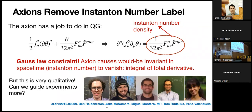One of the most precise statements along these lines is the cobordism conjecture, due to Jake McNamara and Cumrun Vafa, which says different configurations in quantum gravity should be deformable into each other. In quantum field theory, we can't deform configurations with non-zero instanton number into configurations with zero instanton number. So this general notion that quantum gravity doesn't like such things suggests quantum gravity shouldn't like the existence of this instanton number. Axions in quantum gravity do this job for us — they eliminate this instanton number. When we solve the equation of motion for an axion coupled with gluons, the instanton number density becomes a total derivative, giving a Gauss law constraint that the net charge is zero.